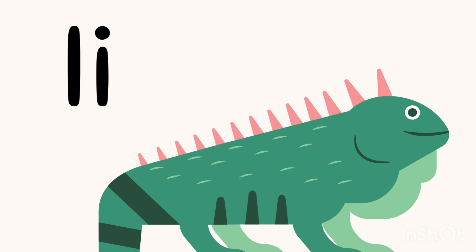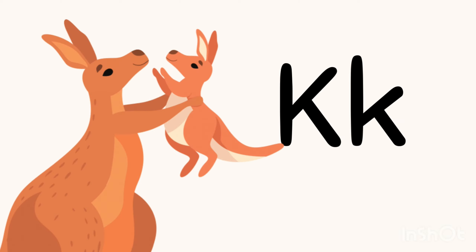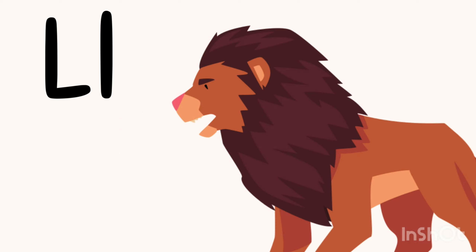I is for Iguana, J is for Jellyfish, K is for Kangaroo, L is for Lion.